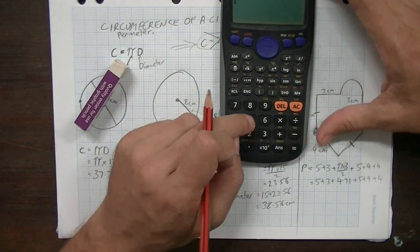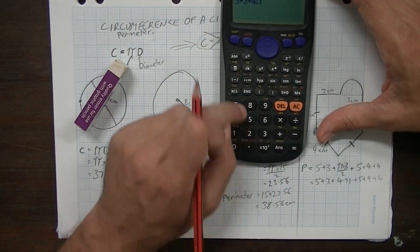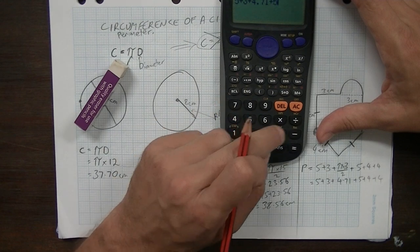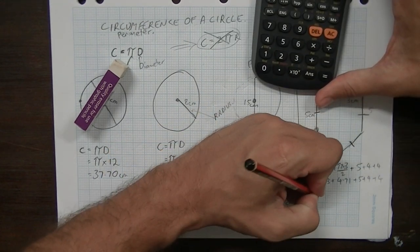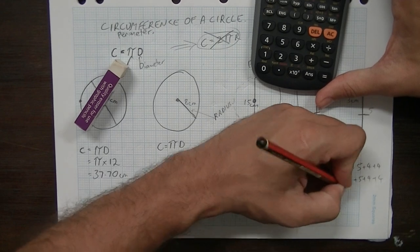Now, if we do all of that on our calculator, 5 plus 3 plus 4.71 plus 5 plus 4 plus 4, we get an answer of 25.71 centimetres.